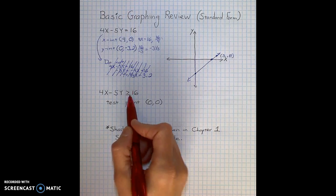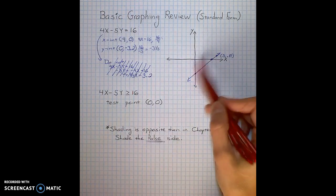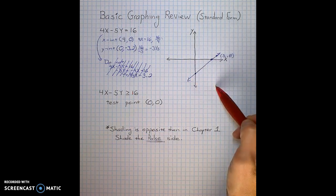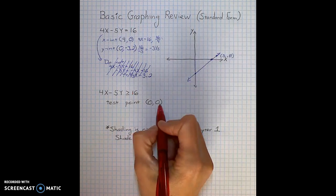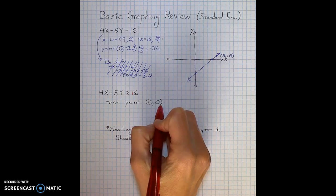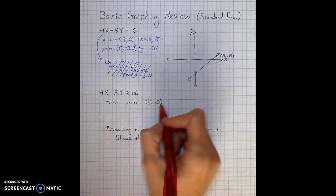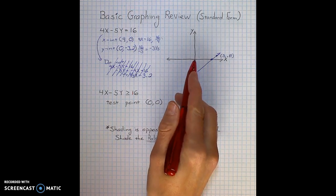When we have a greater than or equal to, we have to decide which side of the line are we shading, the top or the bottom. So we would do that decision with a test point. Pick a point that is not on your line. In chapter 3, that's going to be the ordered pair 0, 0 consistently. So I just always use it as it's easy arithmetic.